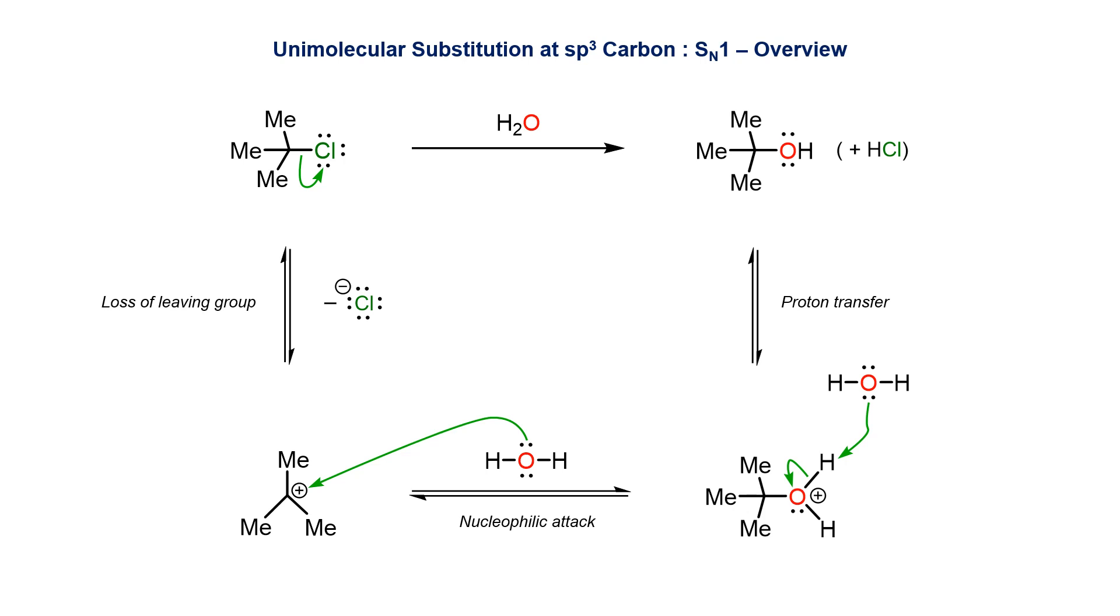With water as the solvent, it can act as a nucleophile and trap the carbocation to give a more stable protonated alcohol. In the last step, the water solvent is then able to deprotonate the oxonium species to afford the alcohol product.